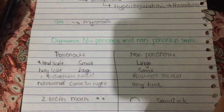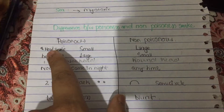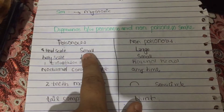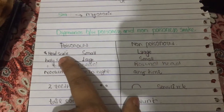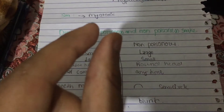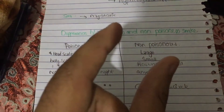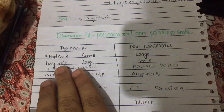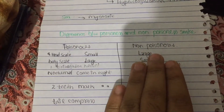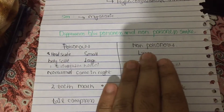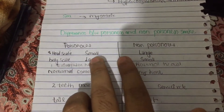In a poisonous snake, the head scales are small, while in a non-poisonous snake the head scales are large. The belly scales in a poisonous snake are large, while the belly scales in a non-poisonous snake are small — these first two points are opposite to one another.